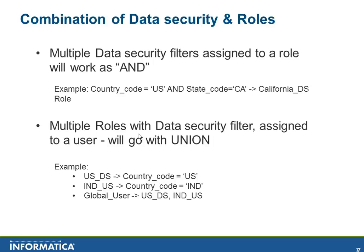Similarly, the other use case: multiple roles with data security filters. Consider a US data steward role with country code equal to US, and an India data steward role with country code equal to India. If both roles are assigned to a single global user and that user logs into the IDD application, the filter will go for union — it will select all records where country code equals US, UNION all records where country code equals India. So when there are multiple roles with data security filters assigned to a single user, it goes for union. But for the same role, if you have multiple conditions added, it goes for AND condition.